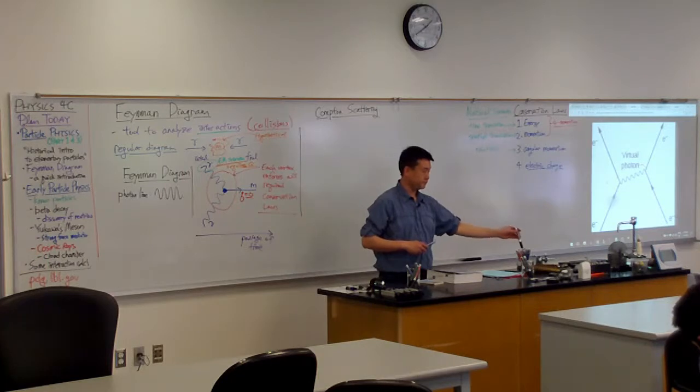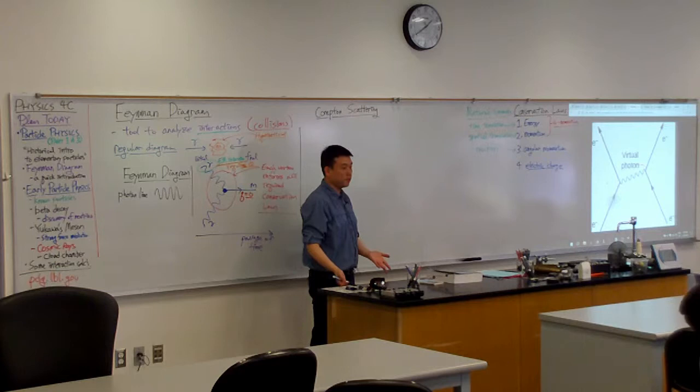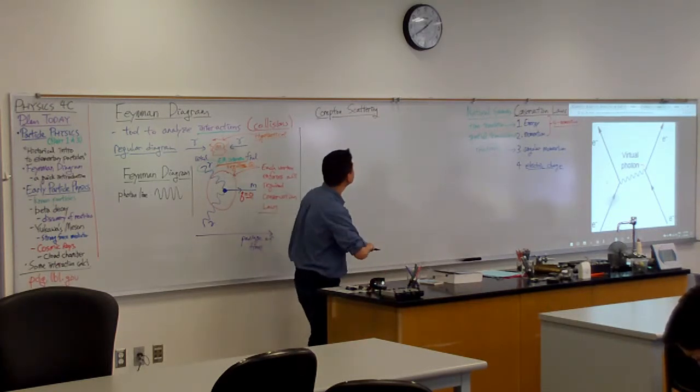When a photon hits an electron and bounces off. Yeah, a photon scatters from a charged particle. We can call it an electron, let's say it's an electron.